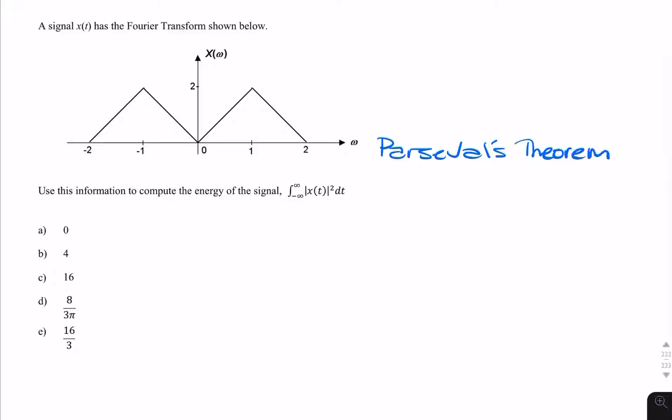We could simply say that the energy we're being asked to find is equal to 1 over 2π, the integral of x of ω squared dω. And that is that.